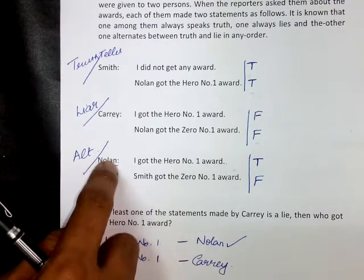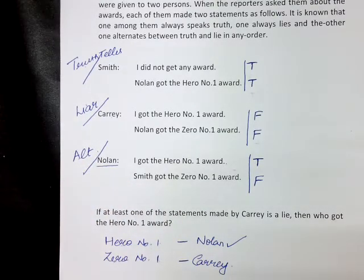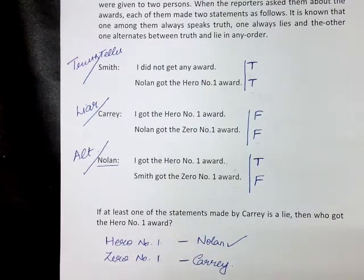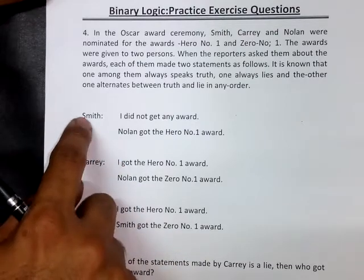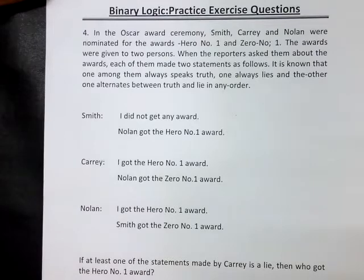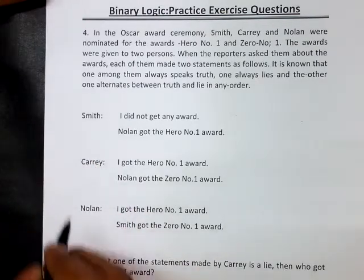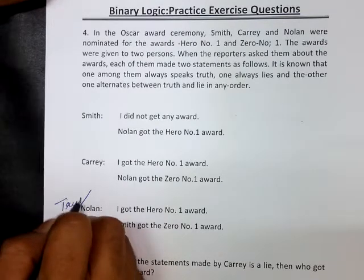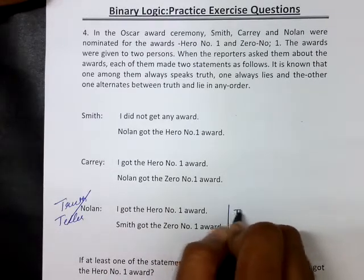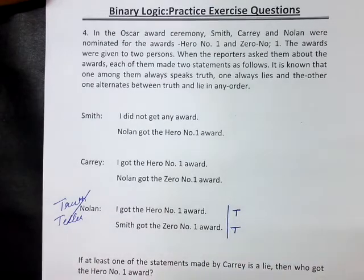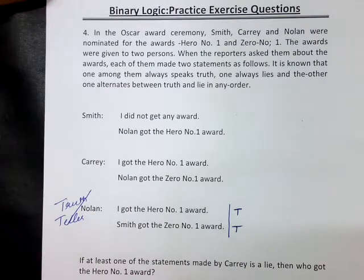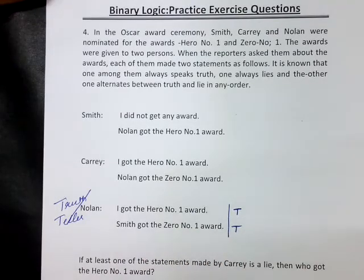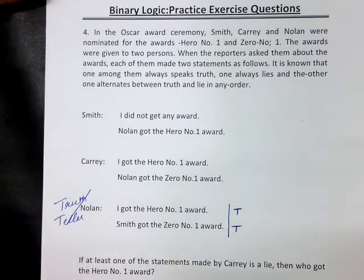However, I cannot make a final conclusion at this point because I just assumed Smith to be the truth teller, but equally likely Nolan can also be the truth teller. So we have to consider that possibility. Let me now assume Nolan to be the truth teller. The first and second statements are both true. Nolan says he got the hero number one award — so hero number one goes to Nolan. Nolan says Smith got the zero number one award — so zero number one goes to Smith.